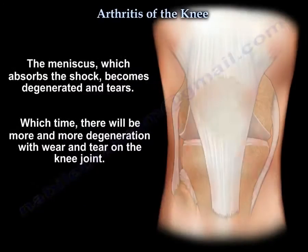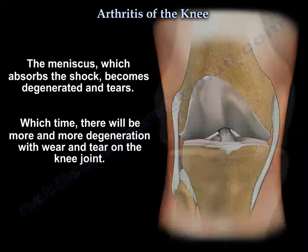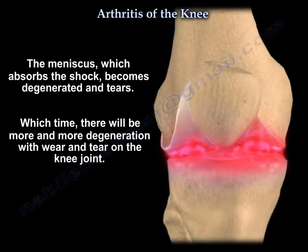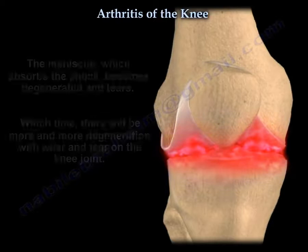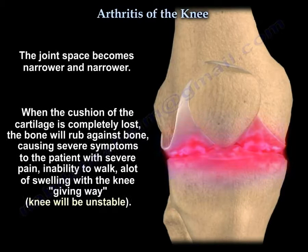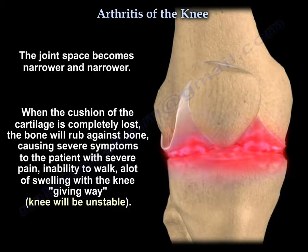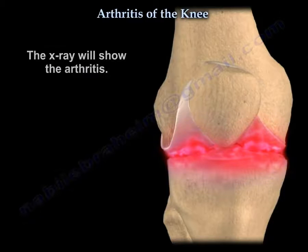The meniscus, which absorbs shock, degenerates and tears. With time there is more and more degeneration and wear and tear — the joint space becomes narrower and narrower. When the cushion of the cartilage is completely lost, bone will rub against bone, causing severe pain and inability to walk.